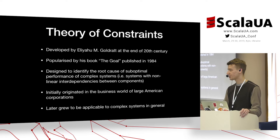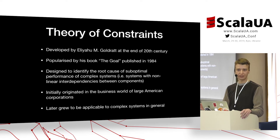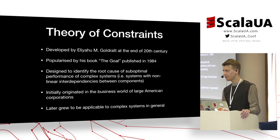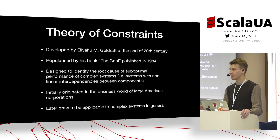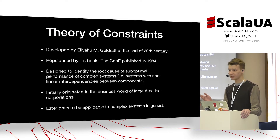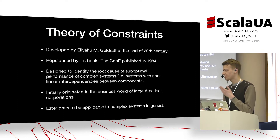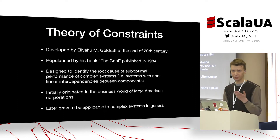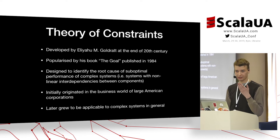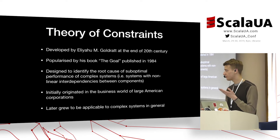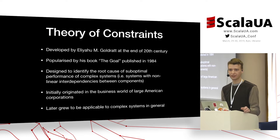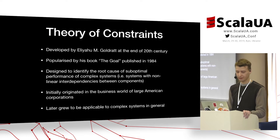The situations that this theory was supposed to address are, for example, when you have a production chain consisting of multiple steps during which some work is performed. There is input for each stage and output for each stage, and this creates, naturally, a dependency between stages, since the input of one stage is fed to another stage.